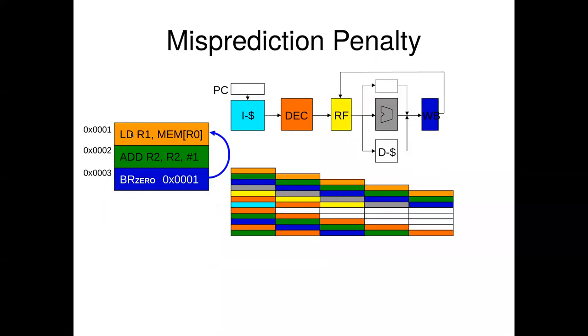This is the problem with branch prediction — it's pretty costly to guess wrong.